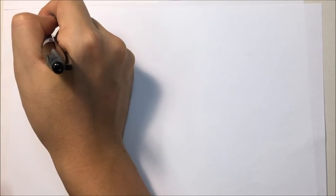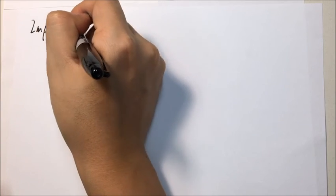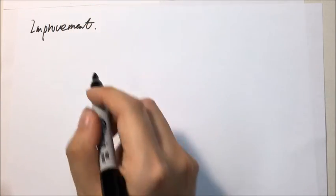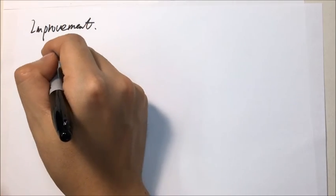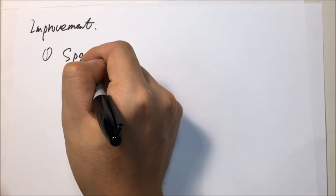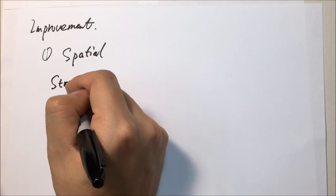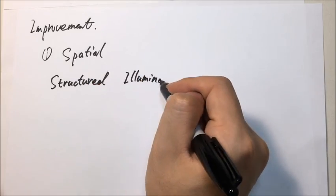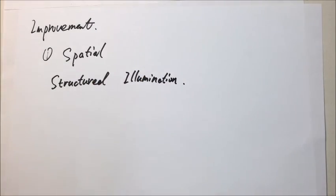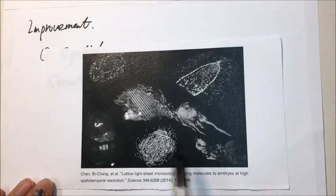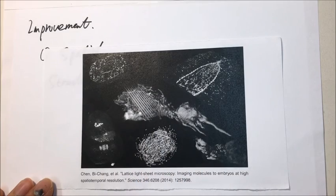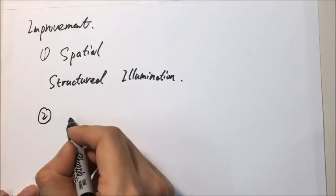Light sheet microscopy is a very popular technique currently, and there are many new designs springing out to improve its performance. For example, in order to improve its spatial resolution, structured illumination is implemented. This clearly reduces the effects of the scattering light and improves the contrast, especially in strong scattering specimens.